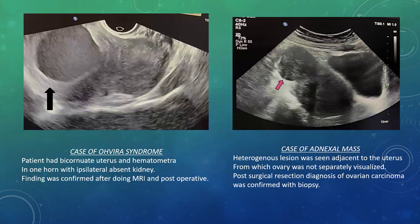Case 3: a case of obstructive hemivagina and ipsilateral renal agenesis, OHVIRA syndrome. Patient was diagnosed with bicornuate uterus and hematometra in one horn with ipsilateral absent kidney. The image shows a transvaginal axial section with hematometra on one horn and normal other horn of uterus. Finding was confirmed after doing MRI and postoperatively.